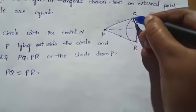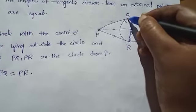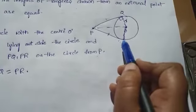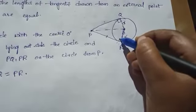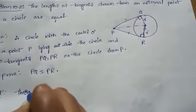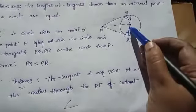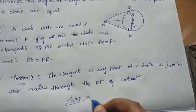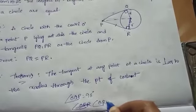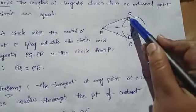PQ is one tangent and OQ is the radius of the circle through the point of contact, so OQ is perpendicular to PQ. PR is the other tangent and OR is the radius of the circle, so OR is perpendicular to PR. According to Theorem 1, angle OQP equals 90 degrees and angle ORP equals 90 degrees. Here we have two right angle triangles: OQP and ORP.